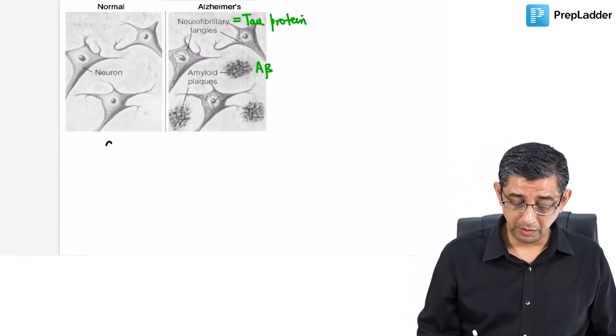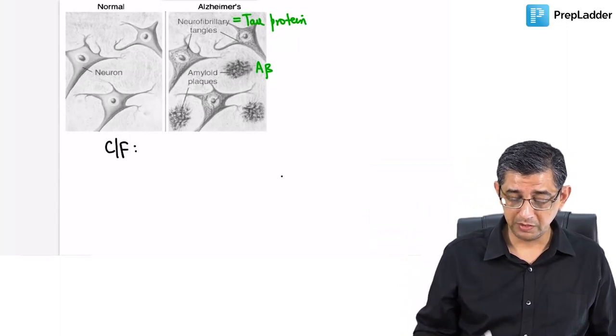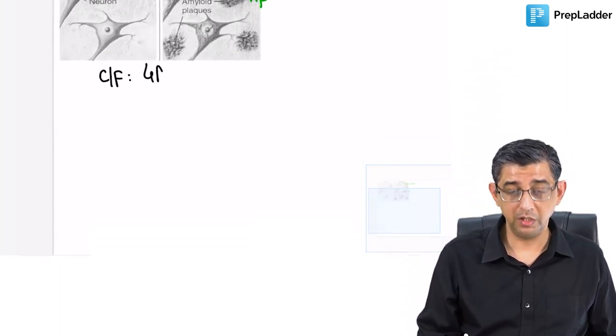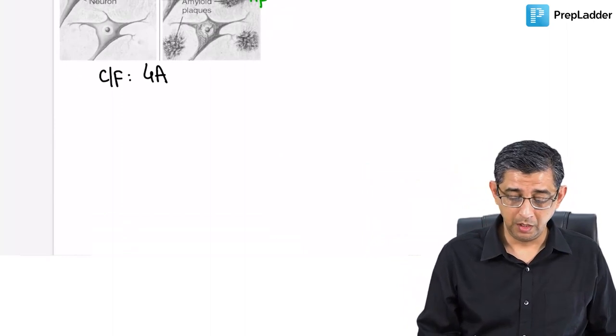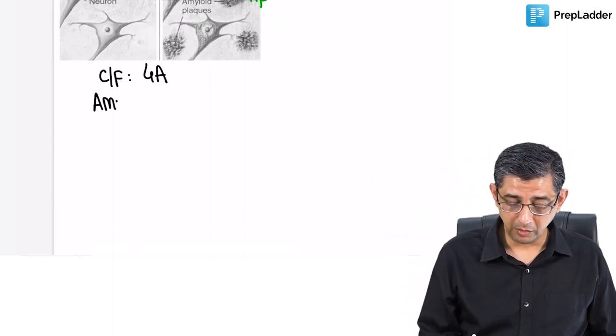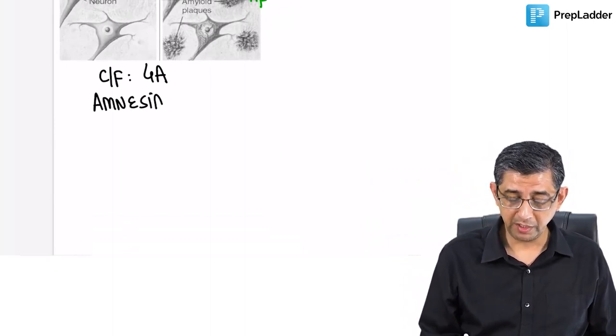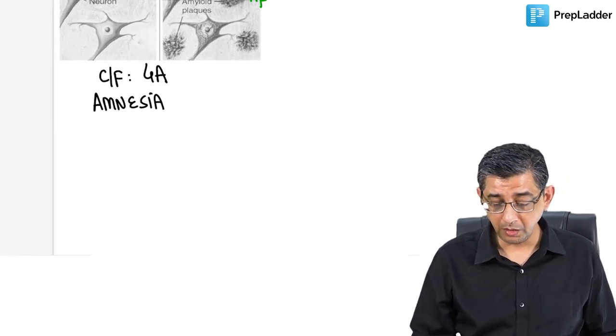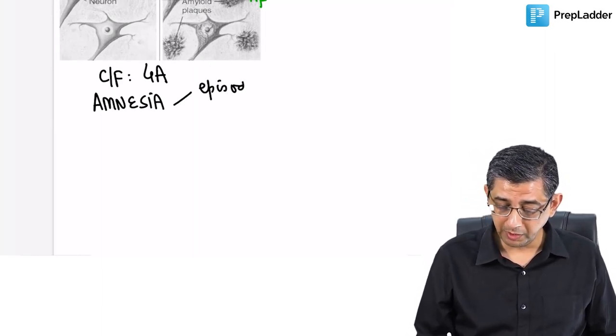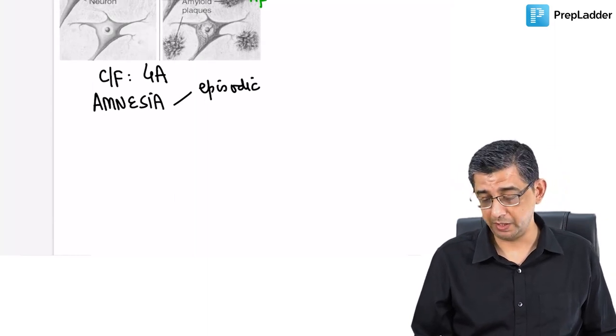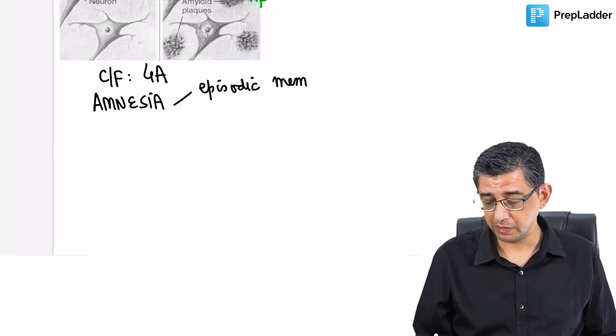Let us now talk about the clinical manifestations that develop in the disease. You can remember them by the mnemonic four A's. The first A component is amnesia, that is forgetfulness. The patient would be having loss of episodic memory.